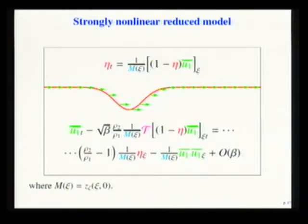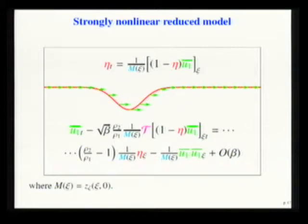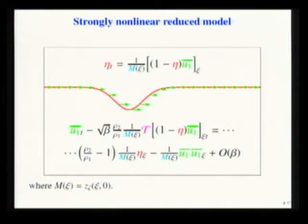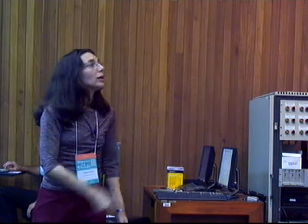With this, we are able to substitute the pressure at the interface up to the order of the approximation. We obtain two equations — this dispersive, Boussinesq-type, strongly nonlinear model — with two variables: the perturbation of the interface and the mean horizontal velocity from the upper layer. When the bottom is flat, the terrain coefficient is exactly one, so it reduces to the model derived by Choi and Camassa. We also have a nonlocal operator in the dispersive term. Since no assumption was made on the amplitude of the wave, this is a strongly nonlinear model.